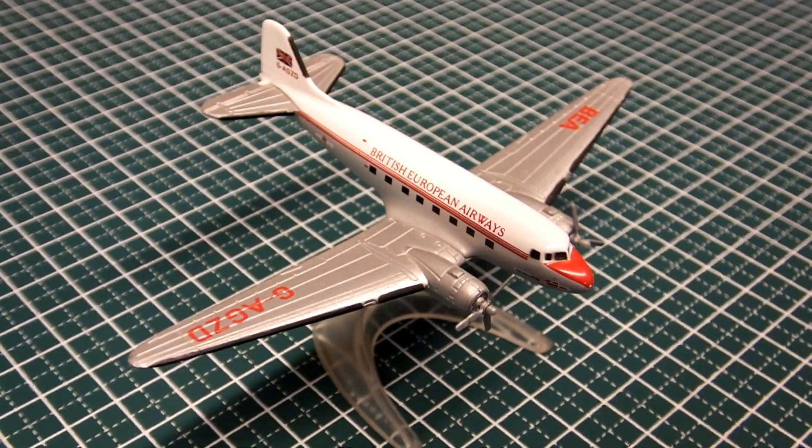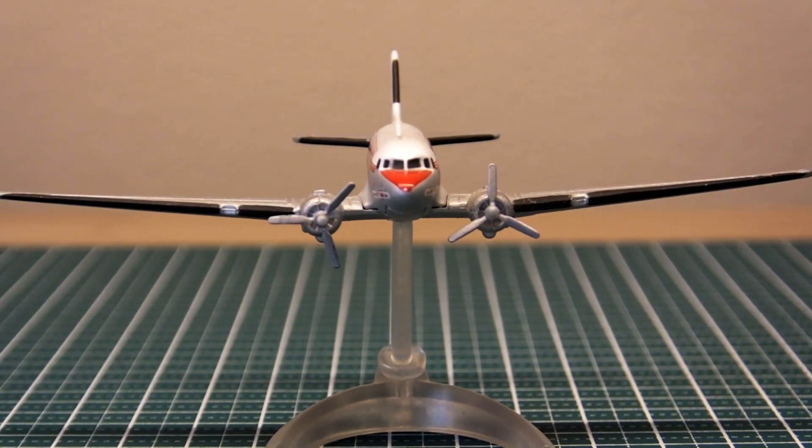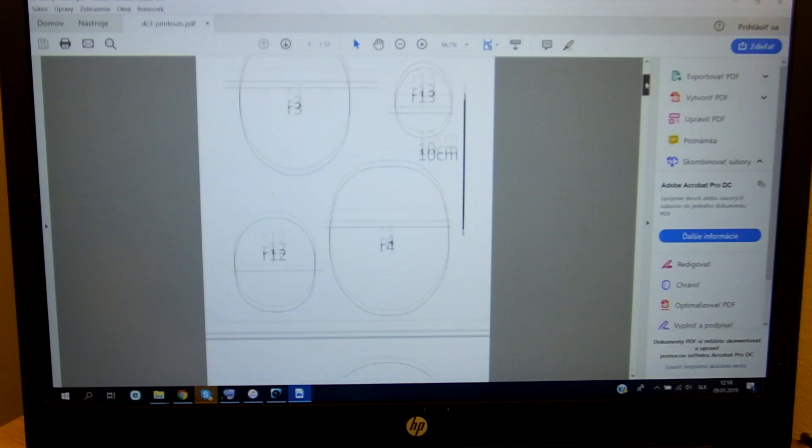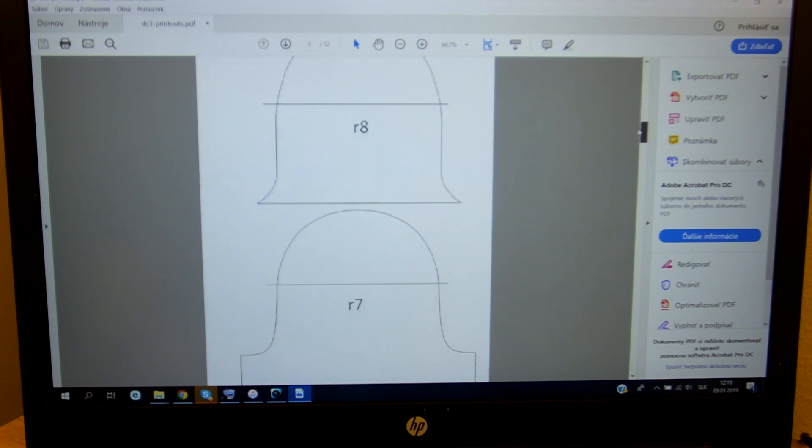This is our reference. And using a bunch of images from the web I created this PDF, which contains a lot of the important cross-sections of the airplane in 1:20 scale.